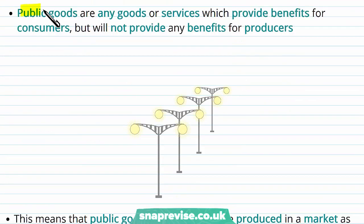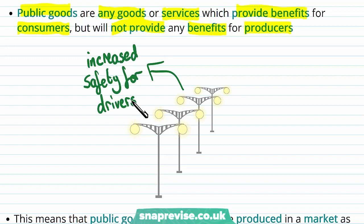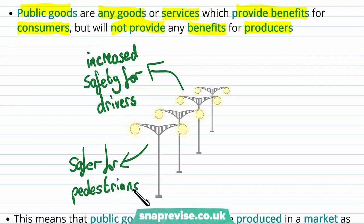Public goods are described as goods or services which provide benefits for consumers but will not provide any benefits for producers. Taking street lighting as an example: consumers benefit from increased safety for drivers as roads become clearer and visibility increases, and equally more lighting is safer for pedestrians. But thinking about what benefits a producer would get from street lighting — quite honestly, there aren't any. The firm doesn't particularly benefit from the increased safety for drivers or pedestrians.